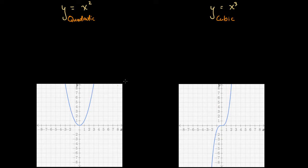Looking at these two graphs, one main difference might jump out at you. On the right-hand side of the origin, both graphs have somewhat similar-looking curves that start at the origin and increase, with y values increasing faster than x values. However, on the left-hand side, we have a quite different story: the quadratic function has only positive y values, whereas the cubic function has negative y values.